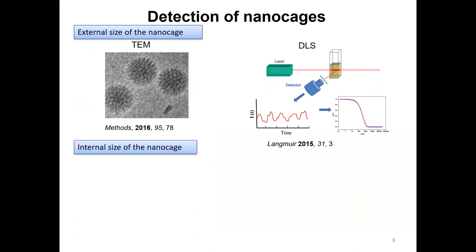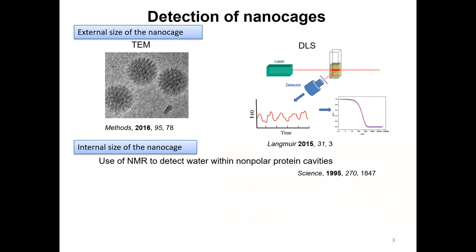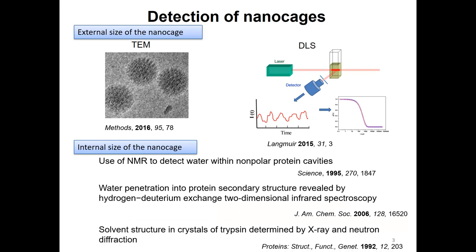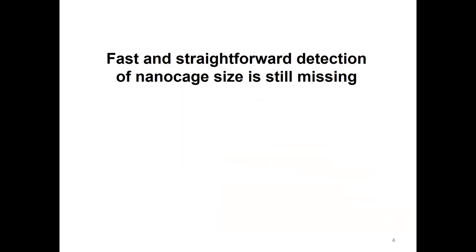How to get the internal size of a nanocage? People can, of course, grow crystals, or use NMR to get water inside the cavity, or use infrared spectroscopy. So those things are hard to do. Is there any way we can do it fast and straightforward?